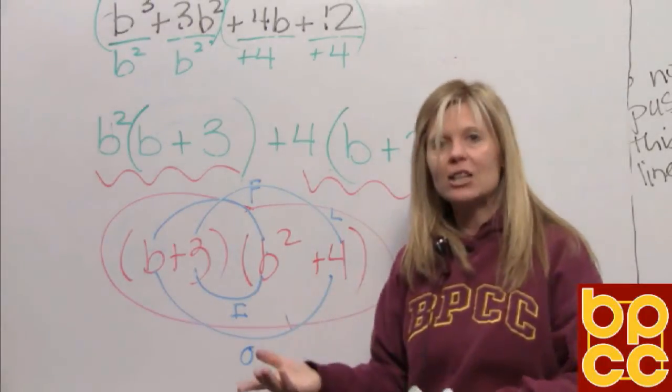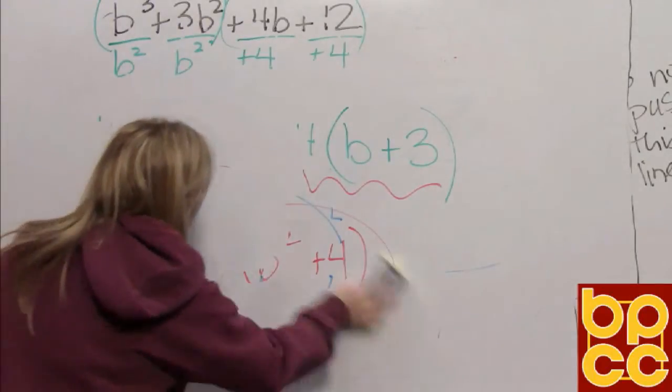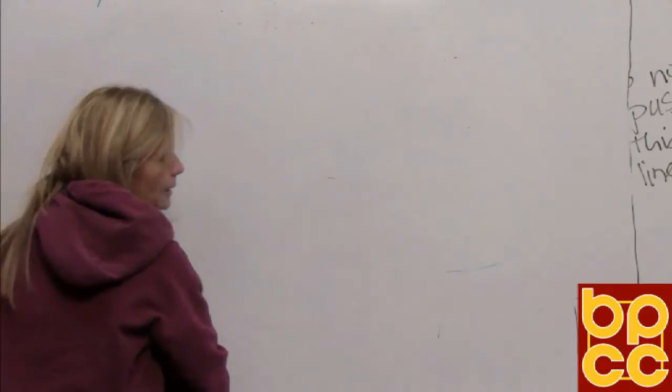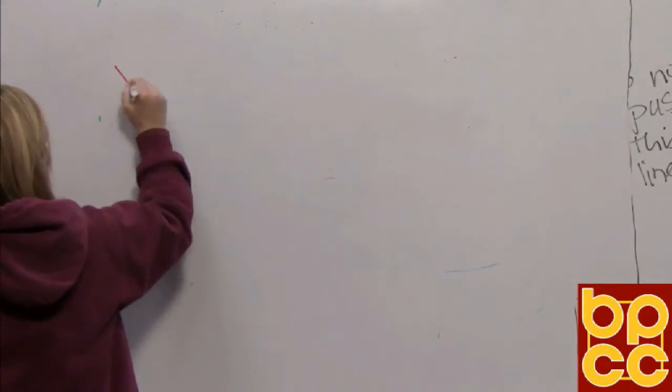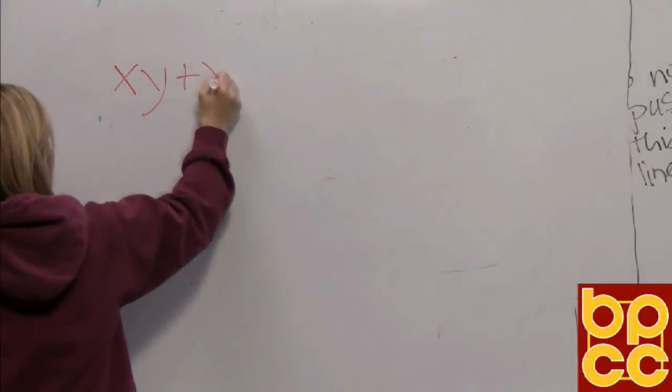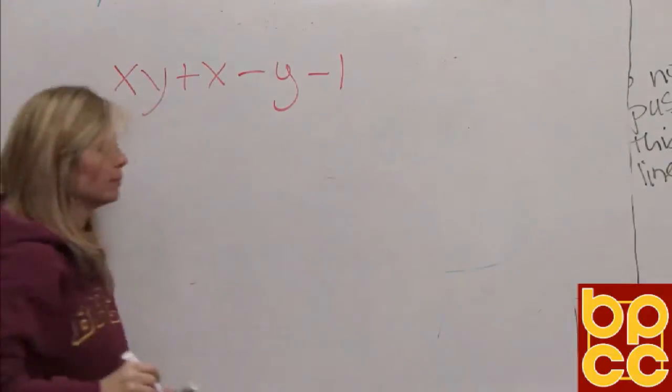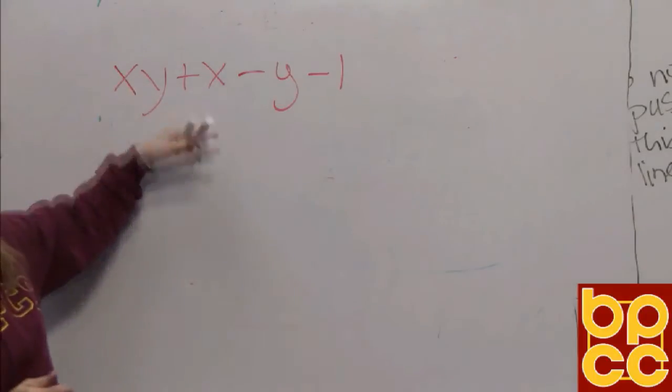Okay, let's try another example in your class notes. So if we look now at expression 4 in your class notes, you have xy plus x minus y minus 1. The directions specifically say to factor. Factor means to make this look like multiplication.